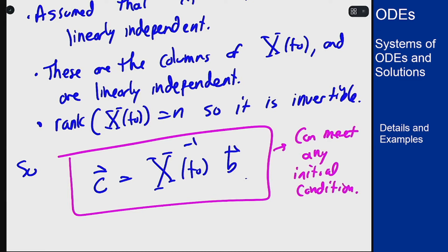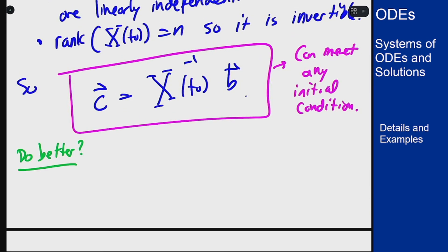Now in some contexts you would do a little bit better than this if you want to be a little more tricky with your initial solutions. So if I can find solutions x1 through xn such that the value at this t0 is the standard basis vector ei, which means it has a 1 in the ith position and a 0 everywhere else—e1 is just 1,0,0,0,0; e2 is 0,1,0,0,0.